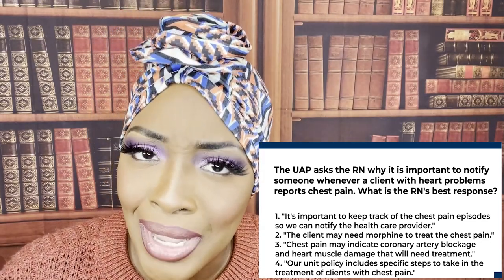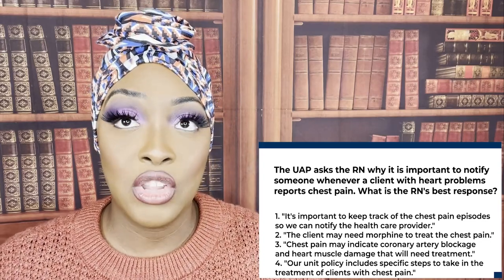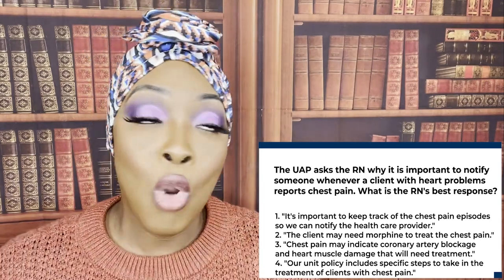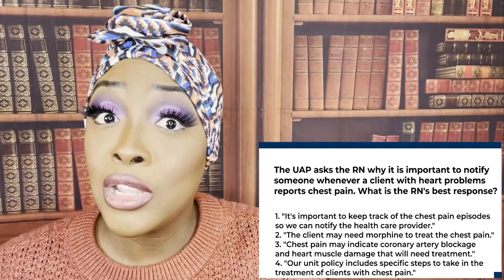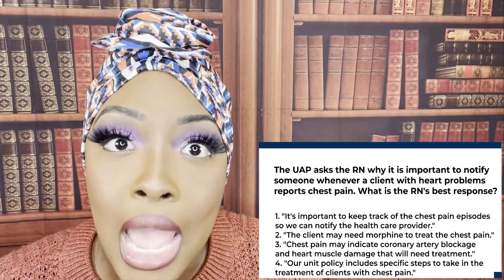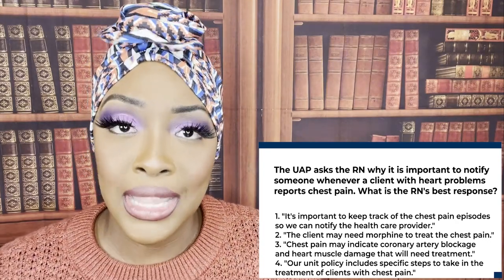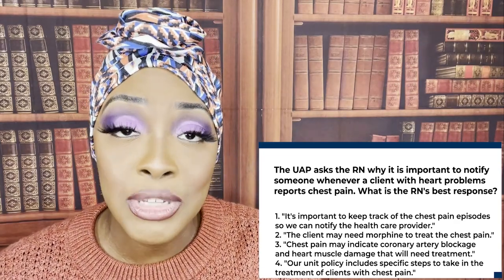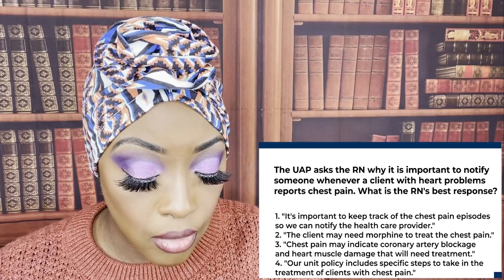What will kill our patient the fastest? When a patient's having chest pain, they're having angina — that is the heart muscle screaming for help because it's not getting enough oxygen. Oxygen is carried in hemoglobin, in RBCs, in the blood. If there's some kind of blockage in the coronary arteries, the heart muscle itself isn't getting the oxygen it needs. Choice three is correct: chest pain may indicate coronary artery blockage and heart muscle damage that will need treatment.